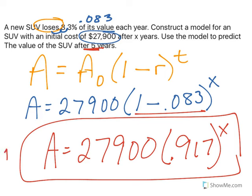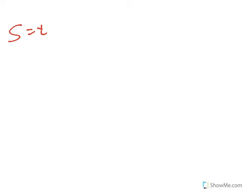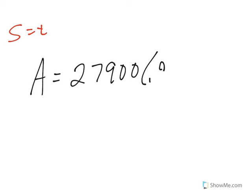That's part 1. Now part 2 says use the model to predict the value after 5 years. So now we say T equals 5. A equals 27,900 times 0.917 to the 5.